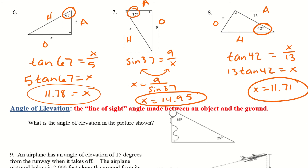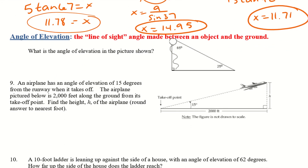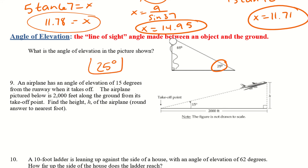Let's move on to the last part of our notes — angle of elevation, which is the line of sight, the angle made between an object and the ground. If you were standing on the ground looking up at something, your angle of elevation would be where you were looking. Looking at the picture, the angle of elevation is 25 degrees.